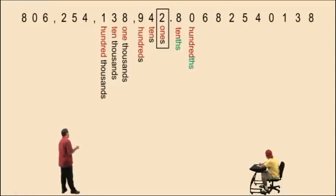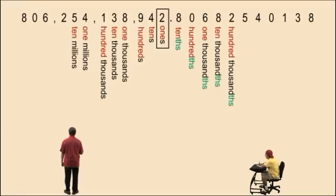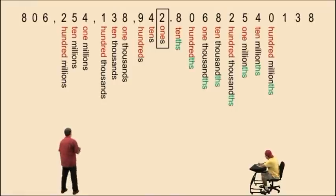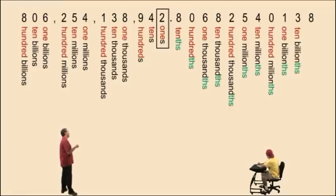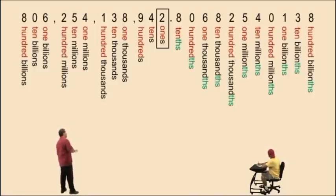Now let's go to the right: one thousandths, ten thousandths, hundred thousandths. Let's go to the millions period: one millions, ten millions, hundred millions. Now let's go back to the right: one millionth, ten millionth, hundred millionth. Let's go to the billions period: one billions, ten billions, hundred billions. And back to the right: one billionth, ten billionth, hundred billionth. Now there's the pattern — notice how the pattern goes this way, but it also goes the other way too, in our decimal place values.